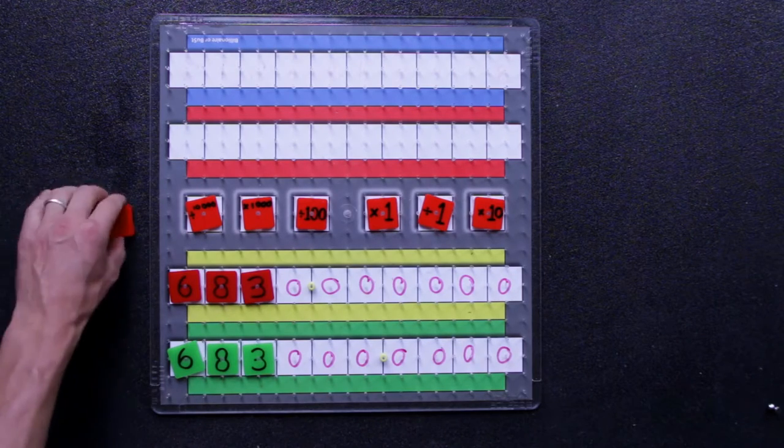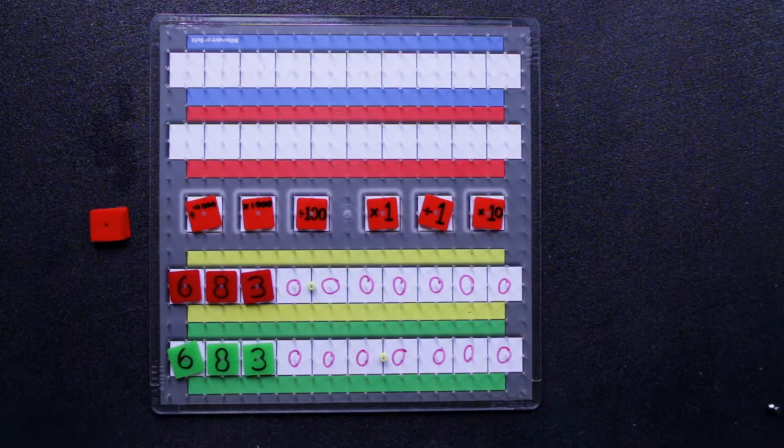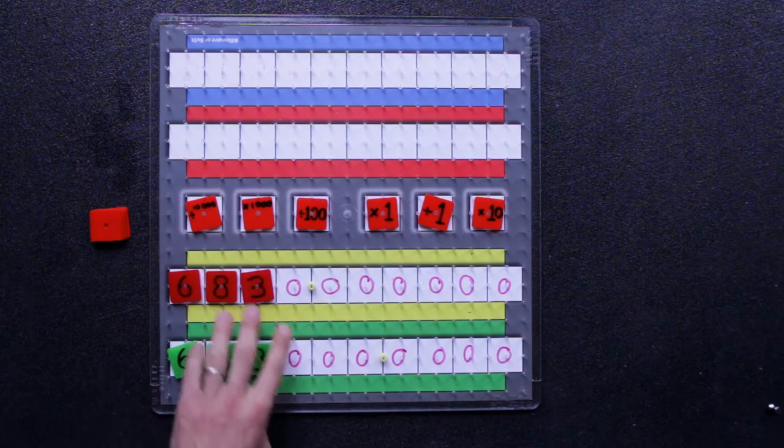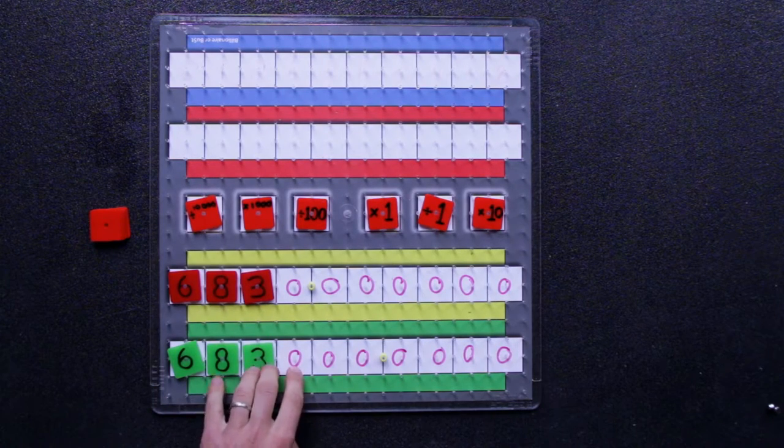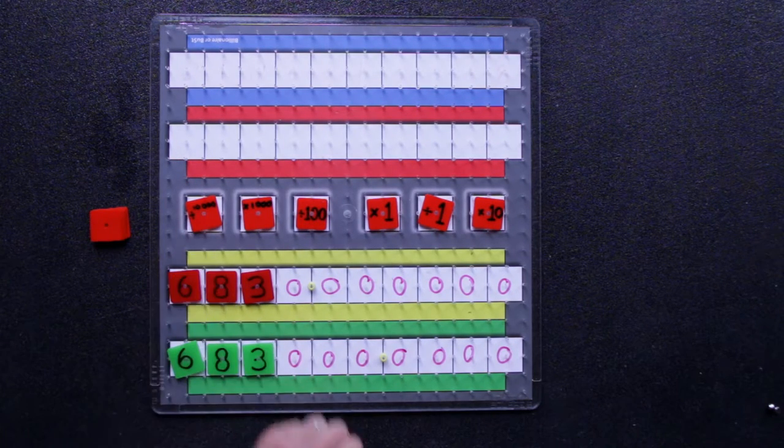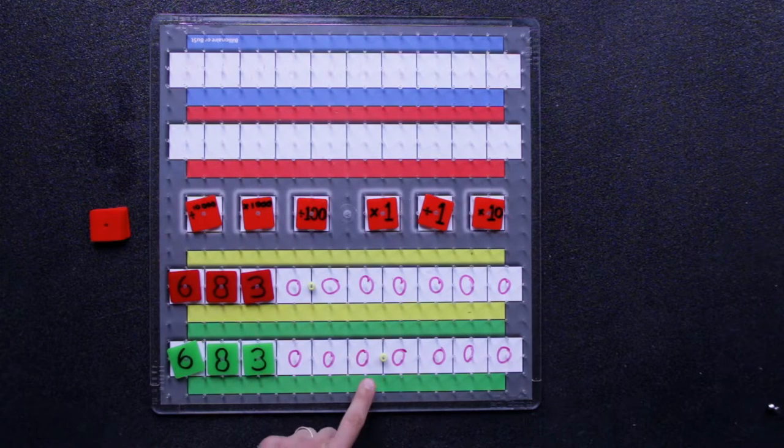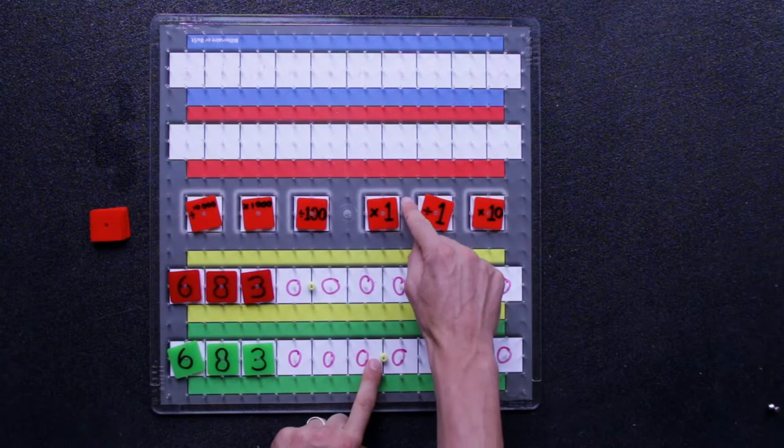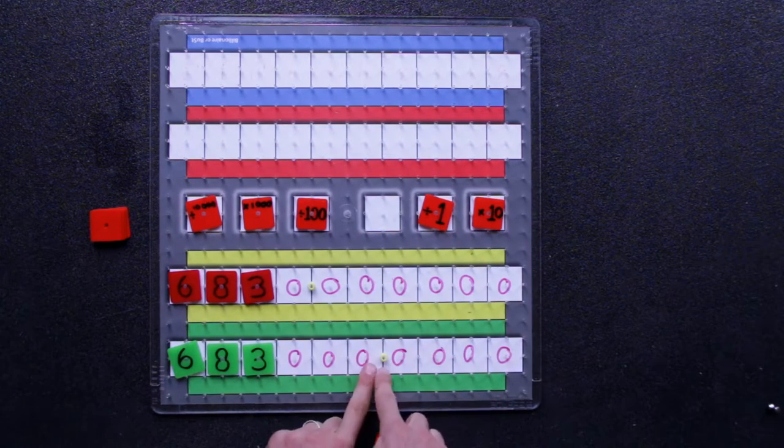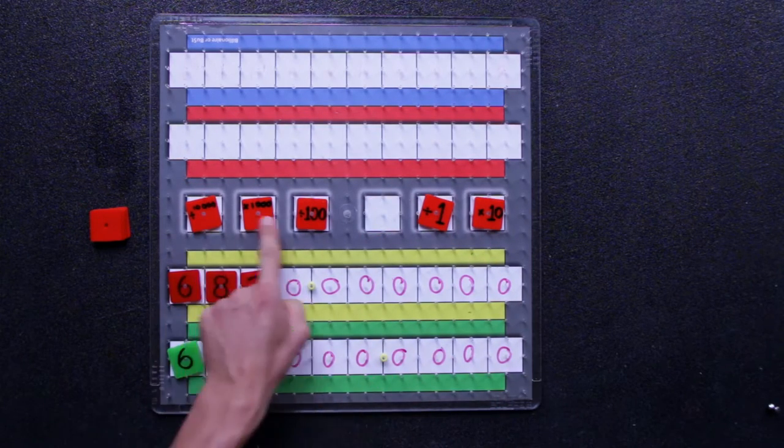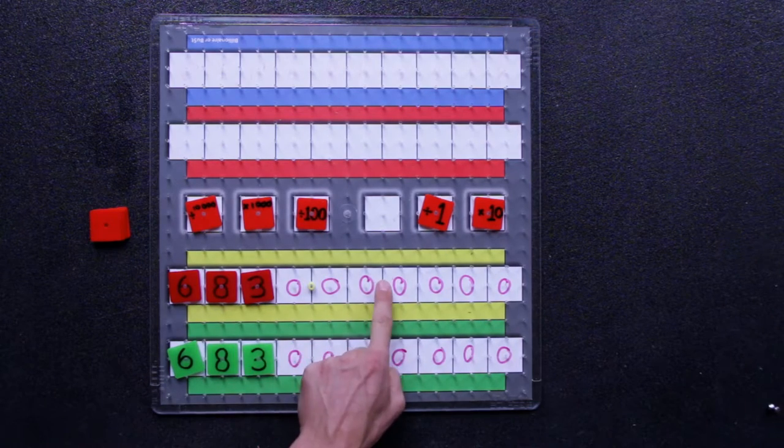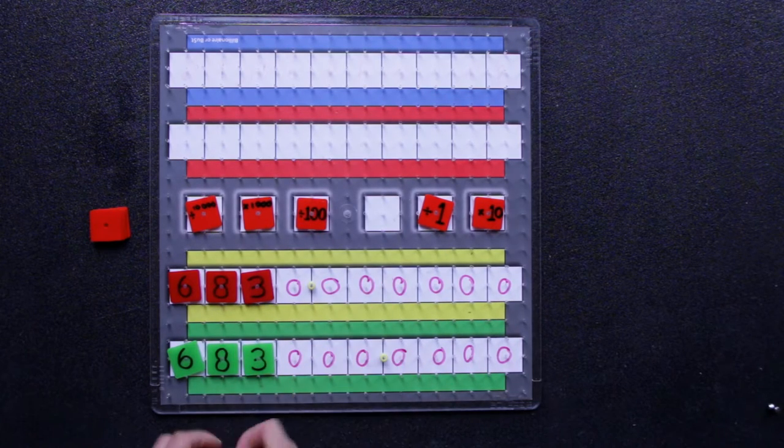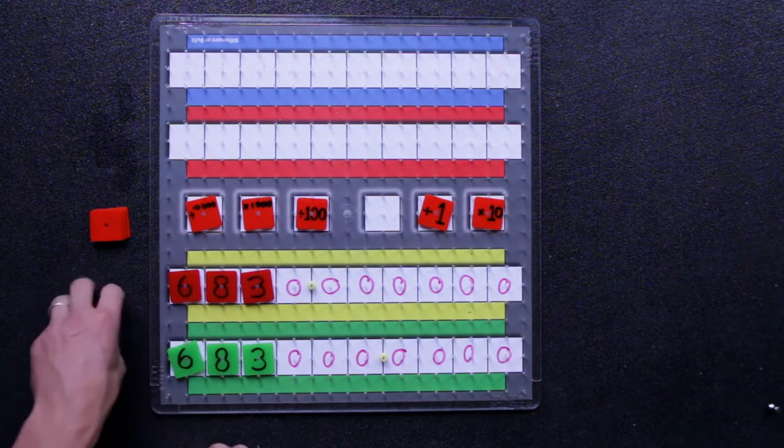Now, because green's been running away for so long, red gets to choose two actions, not just one, on their next turn. So if green decided to take the times by one action just to stay there because they know there's no times by a hundred here for red to choose to get right where they are, red might be able to combine two of these actions.